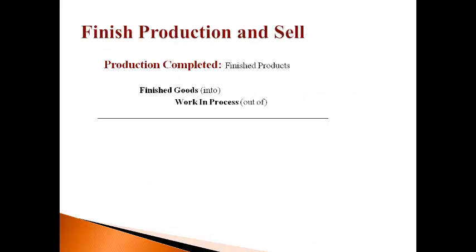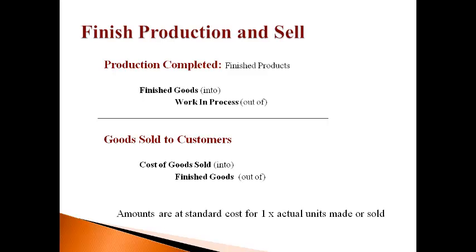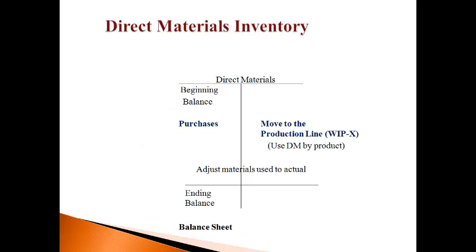The cost of work in process is moved to finished goods when the products are complete. The same costs are moved to cost of goods sold when products are sold to customers. These amounts are always recorded at standard cost. The direct materials account can be pictured as items sitting on the shelf in the direct materials warehouse. Purchases are added, and the estimate of materials used moved to the production line decreases the account. The adjustment to get materials used to actual for the company can be a debit or a credit. The ending balance is reported on the balance sheet.